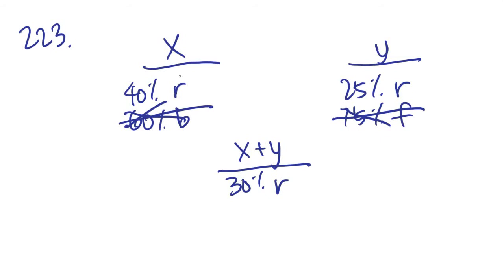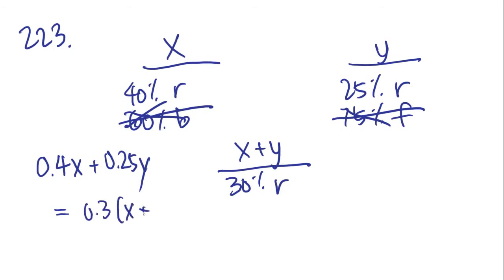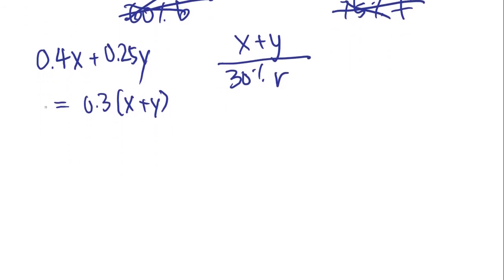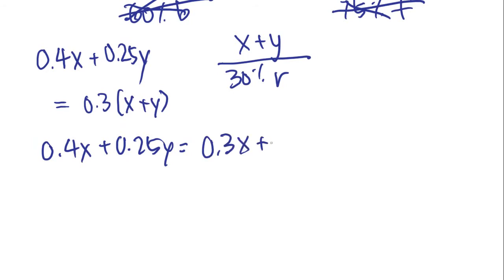We turned it into a mixture. That means we had 40% of mixture X plus 25% of mixture Y, and we got 30% of the new mixture, which was X plus Y. So: 0.4X plus 0.25Y equals 0.3X plus 0.3Y.